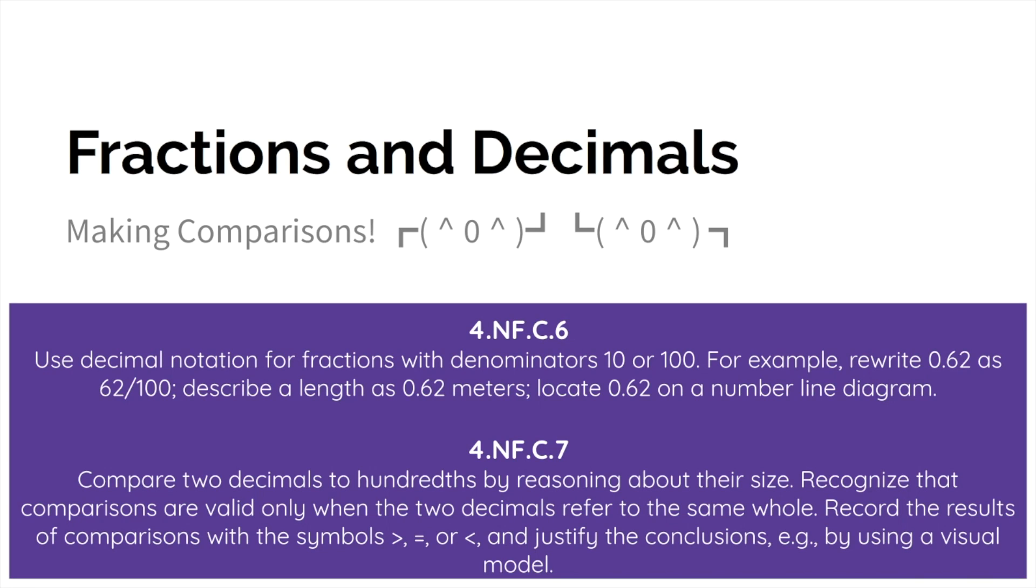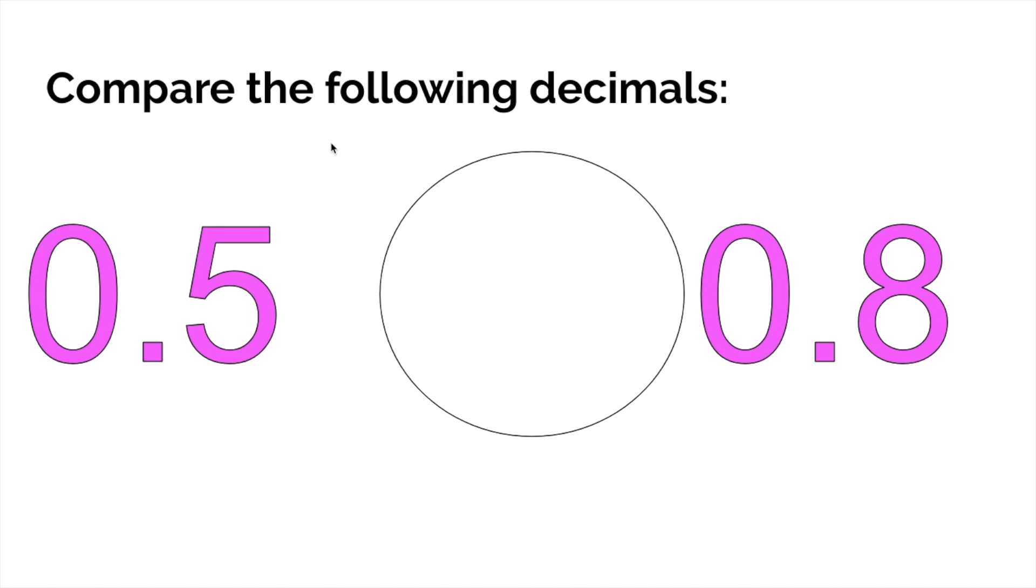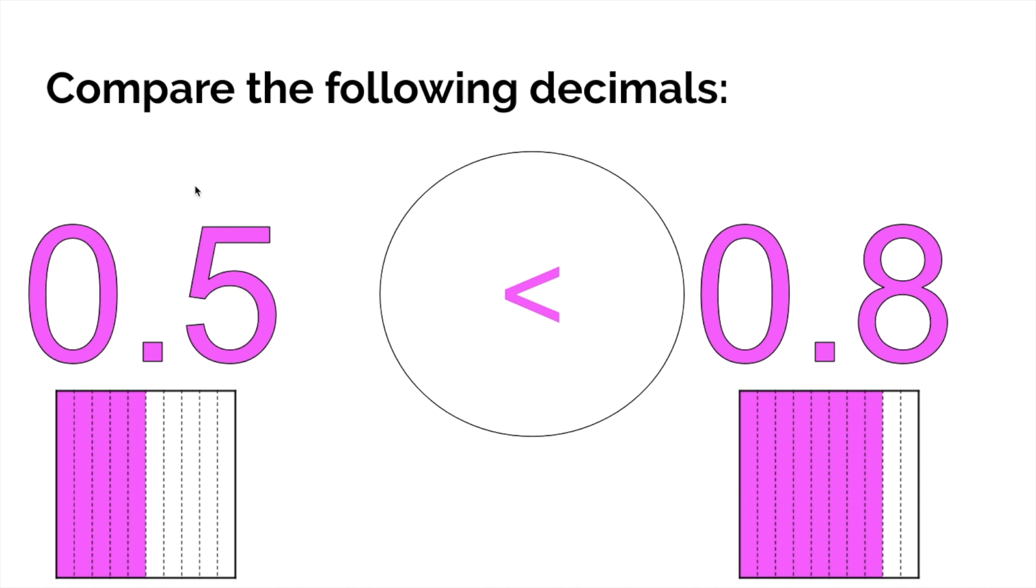Making comparisons with fractions and decimals. Let's say we wanted to compare these two decimals, right? Five tenths is what compared to eight tenths? You might be thinking, oh, eight tenths is larger because eight's bigger than five. You'd be right, that's correct. Eight tenths is greater, so we read this as five tenths is less than eight tenths.